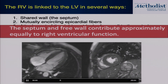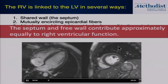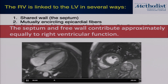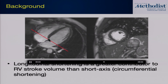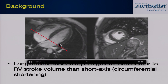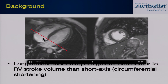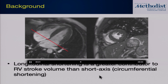Both the septum and the RV free wall contribute approximately equally to right ventricular function. RV contractility comes from multiple different areas. Longitudinal shortening happens in the RV just like in the LV, but is actually more pronounced in the RV — longitudinal shortening is a greater contributor to RV stroke volume than short axis or circumferential shortening. You can see there's much more longitudinal motion of the tricuspid annulus compared to the mitral valve.